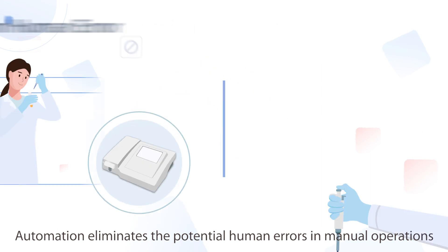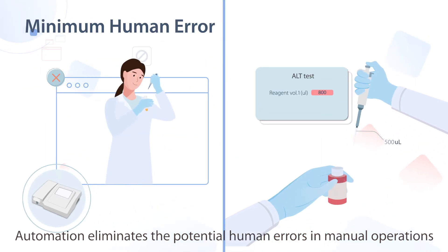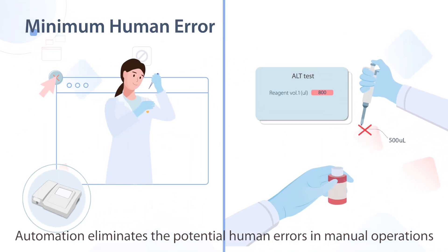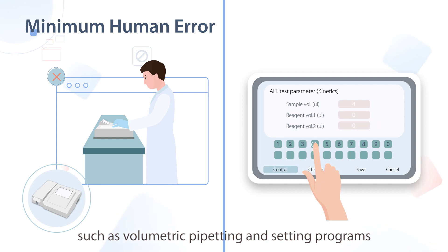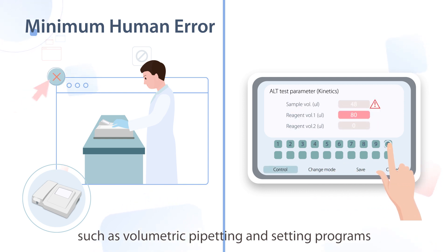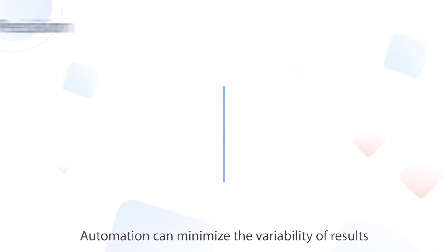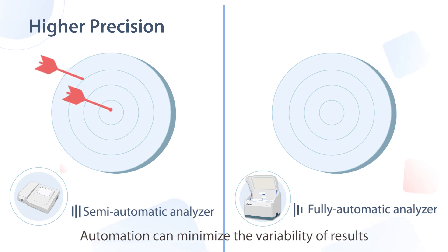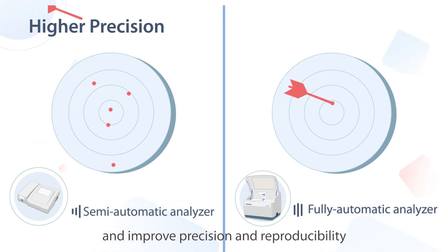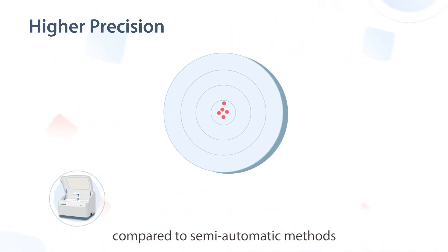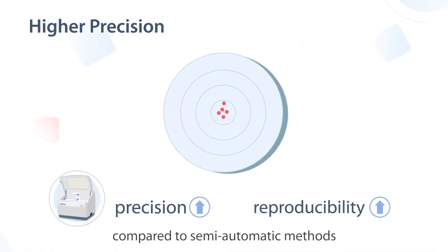Automation eliminates the potential human errors in manual operations such as volumetric pipetting and setting programs. Automation can minimize the variability of results and improve precision and reproducibility compared to semi-automatic methods.